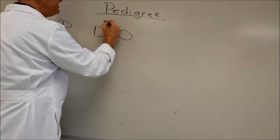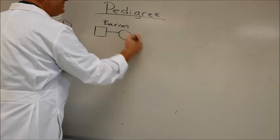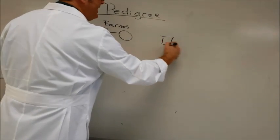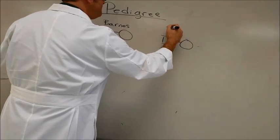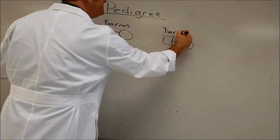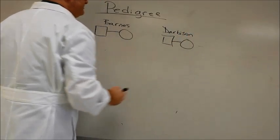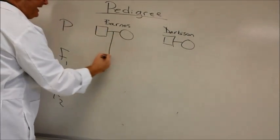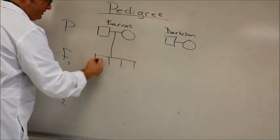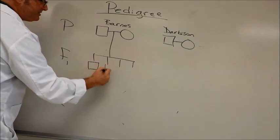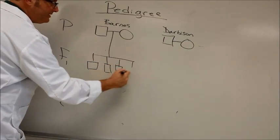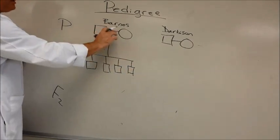These are my grandparents on the Barnes side, and these are my grandparents on my mom's side, the Darbyson's. The Barnes's had four boys, and so I'm drawing squares to represent males.